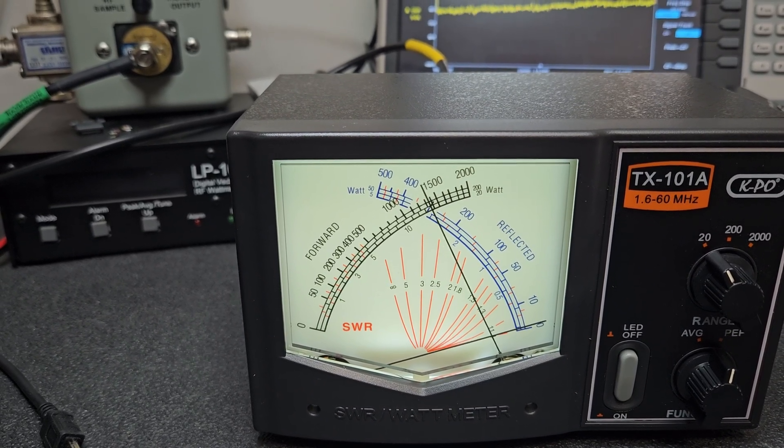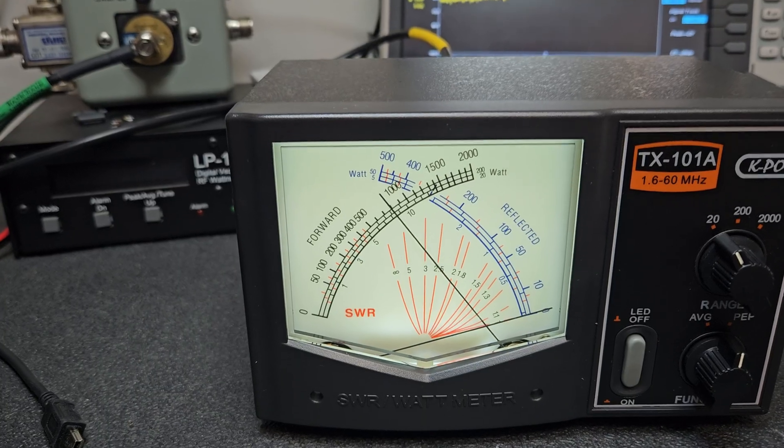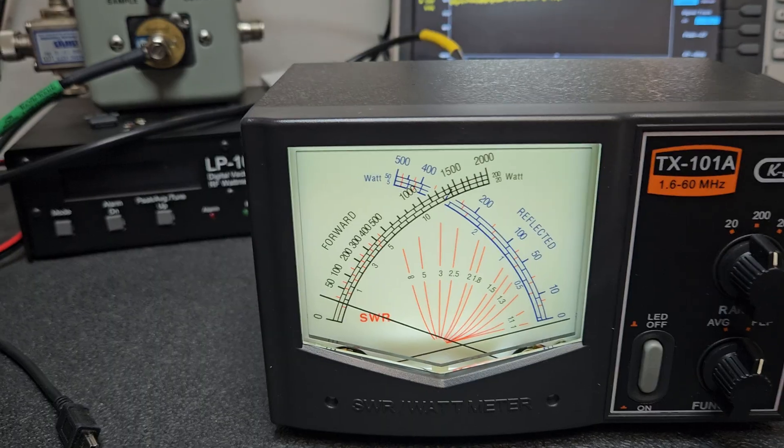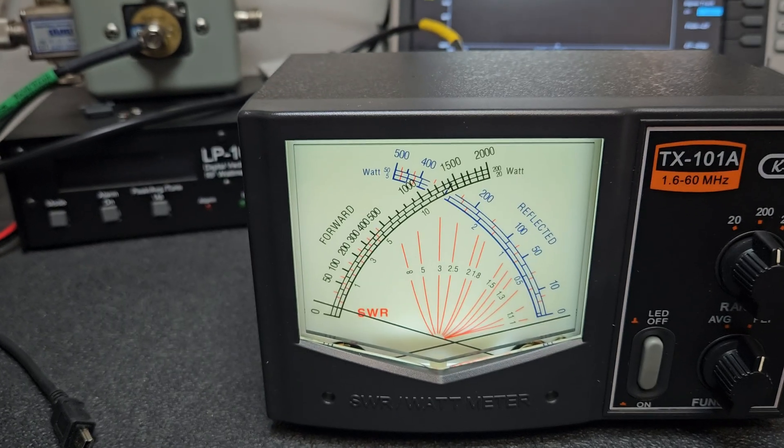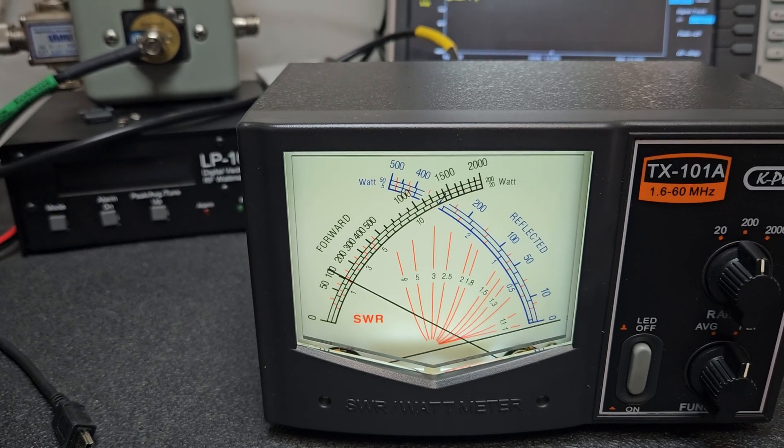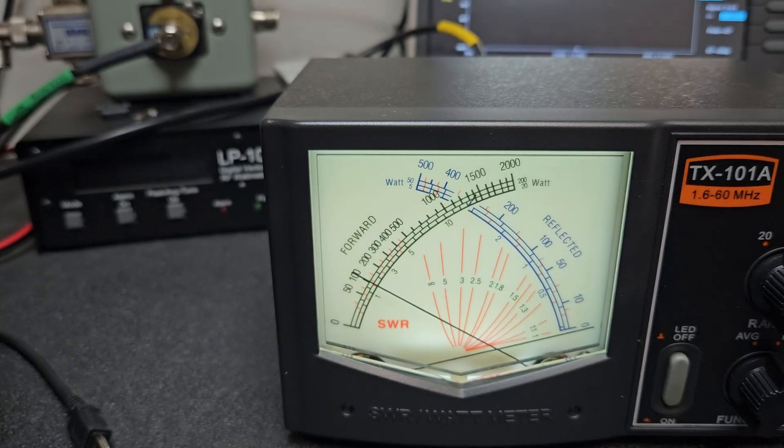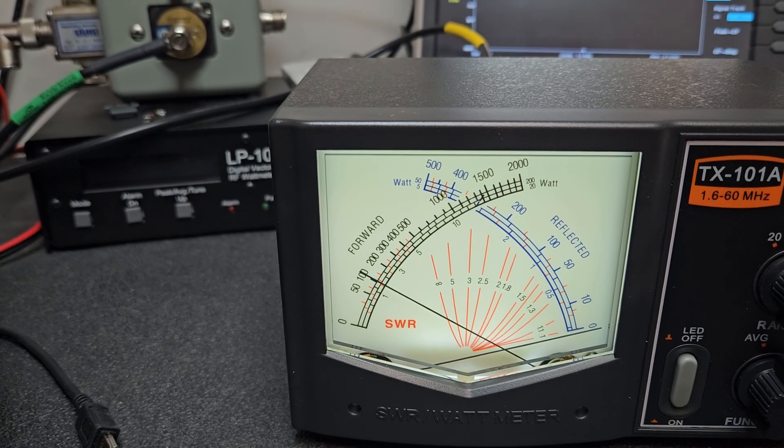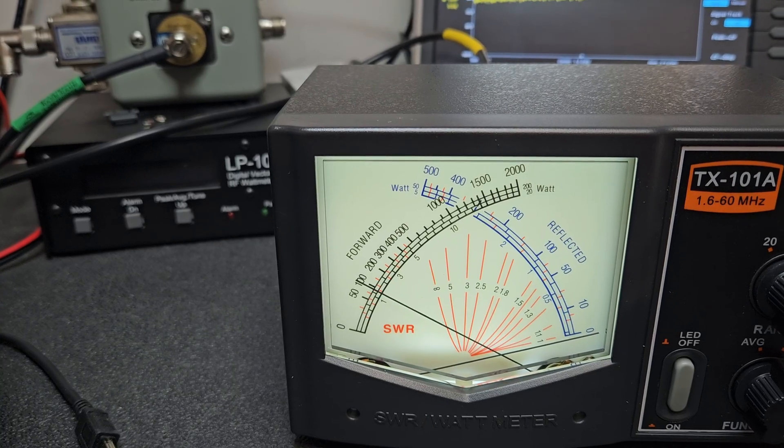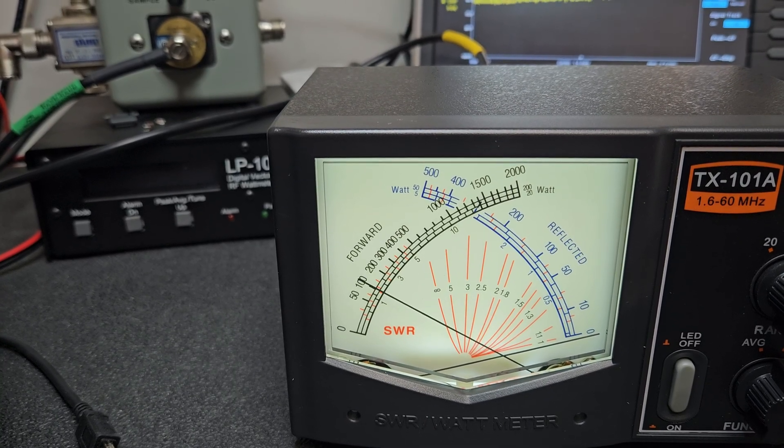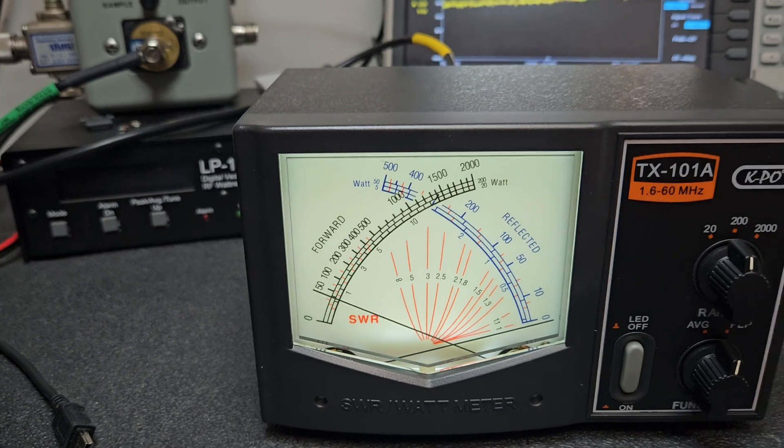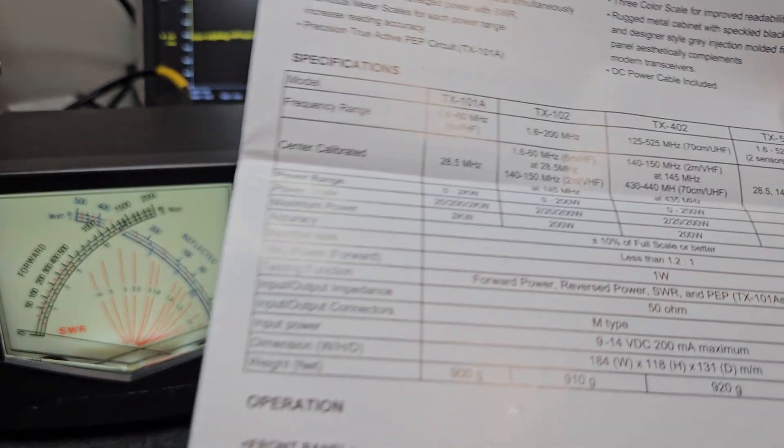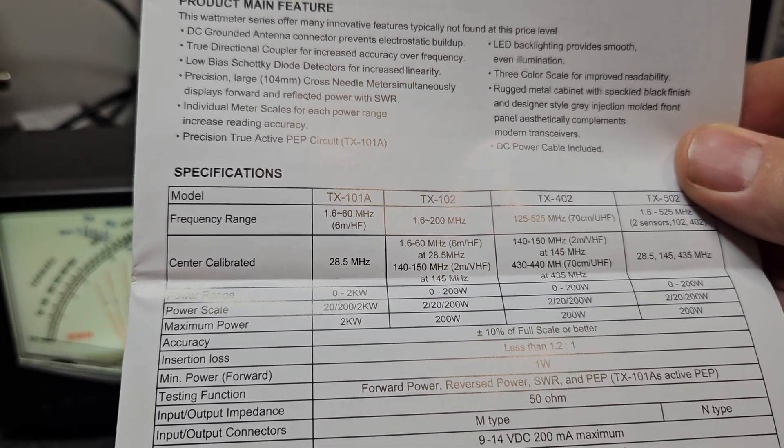We'll go over to the 200 watt scale just because. Again, it's not going to be as accurate but it will measure power. As we talk you can clearly see now where it says 100, that's 10 watts. It is going slightly over which would tell us that it's about 12 watts or so.